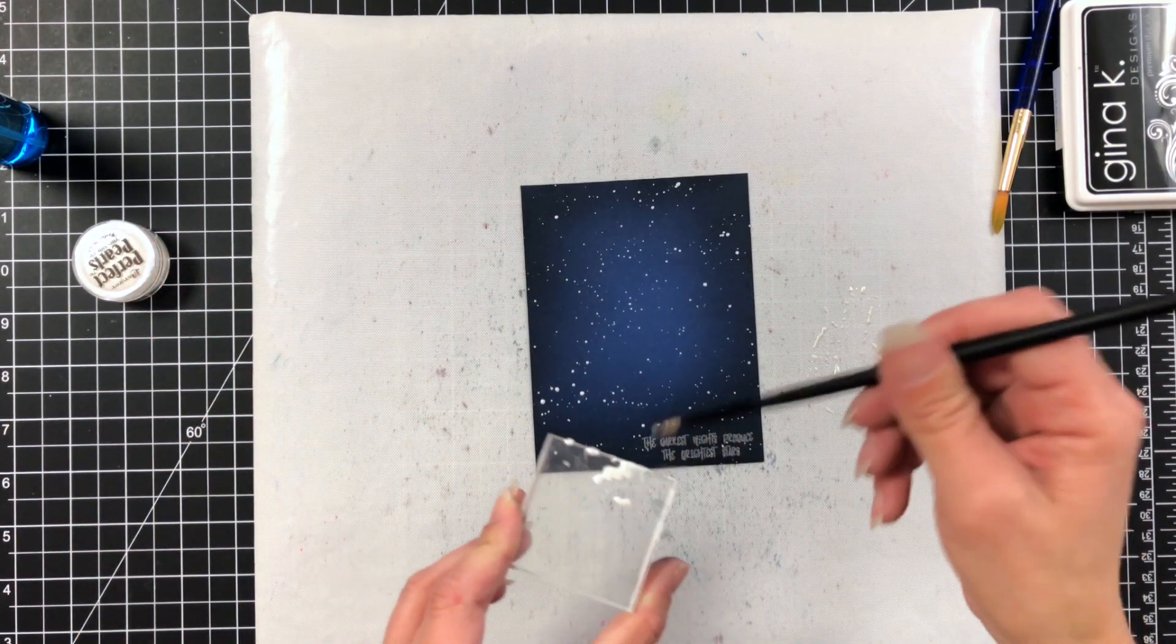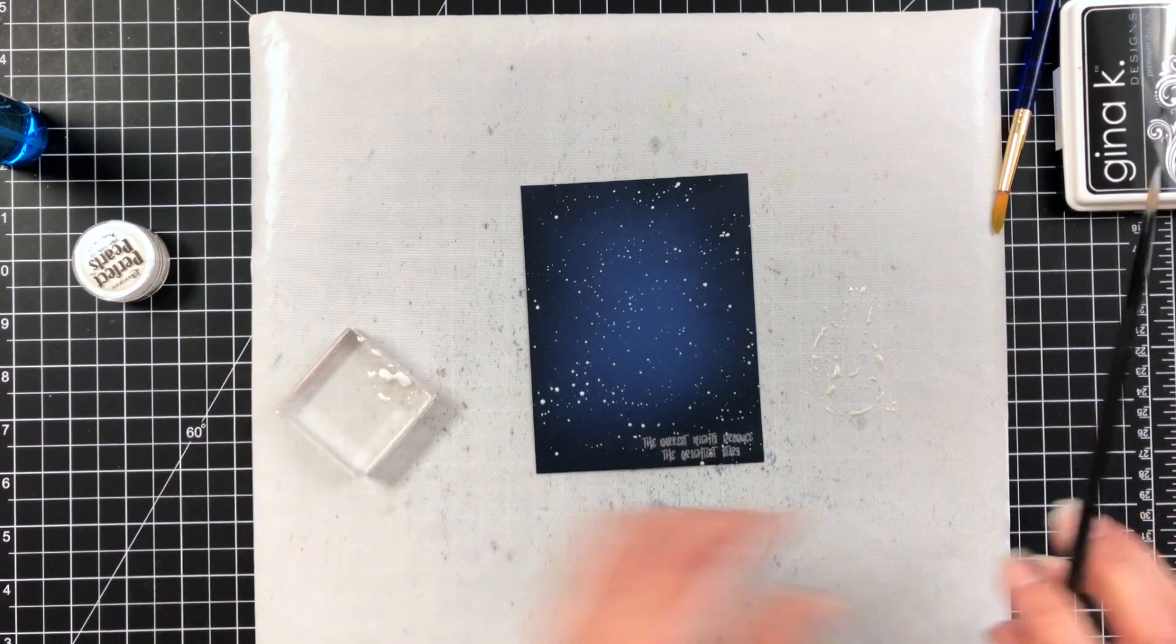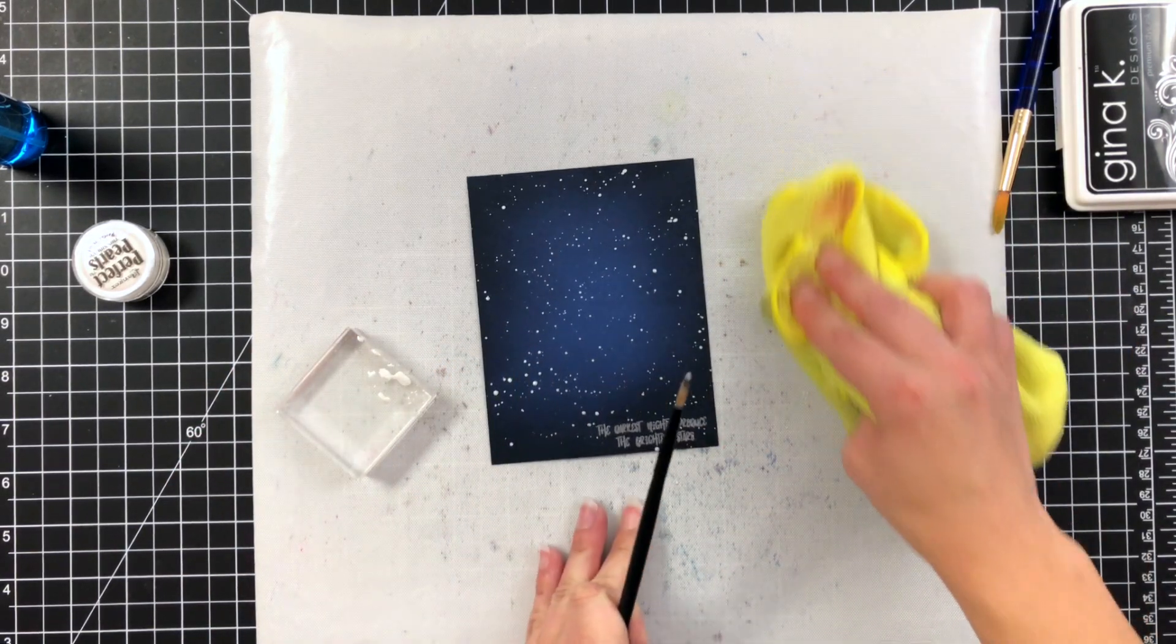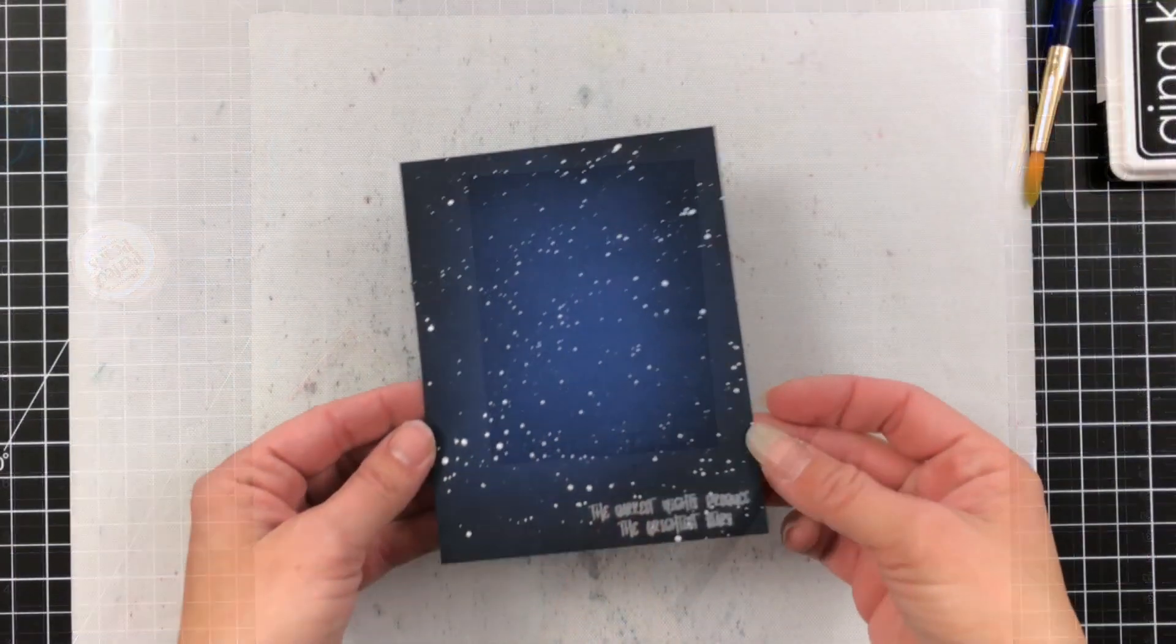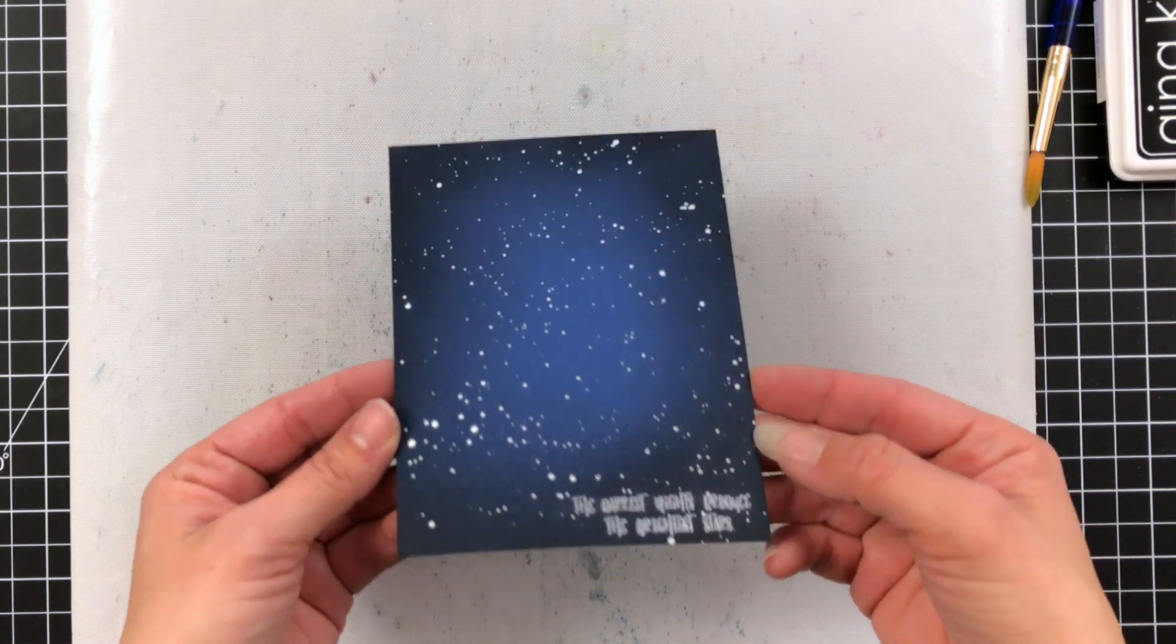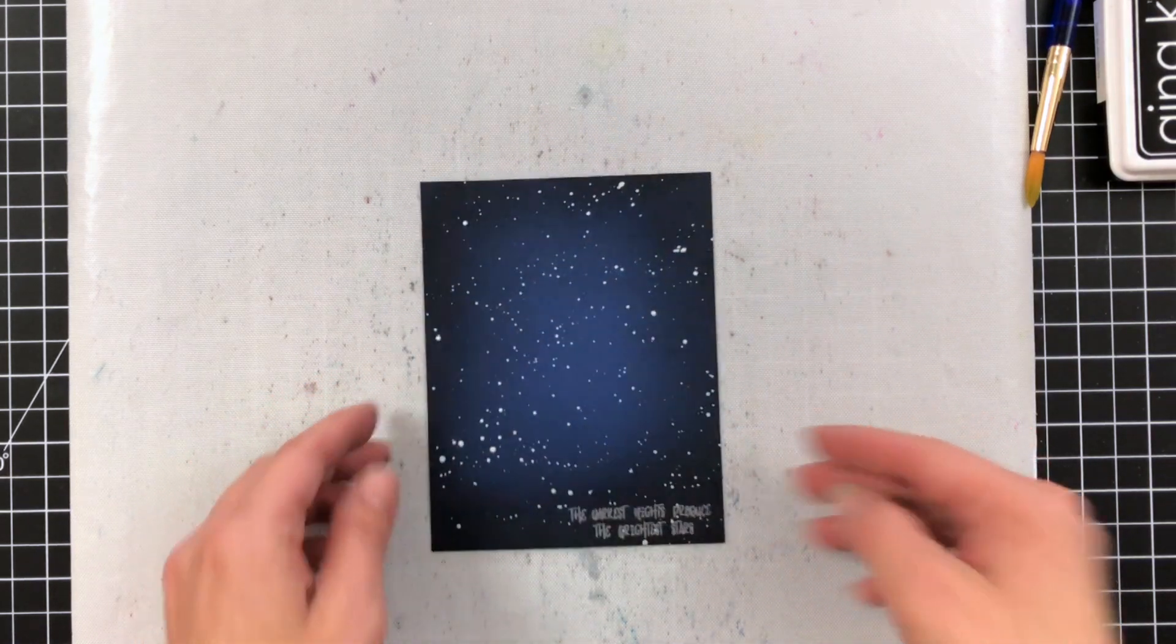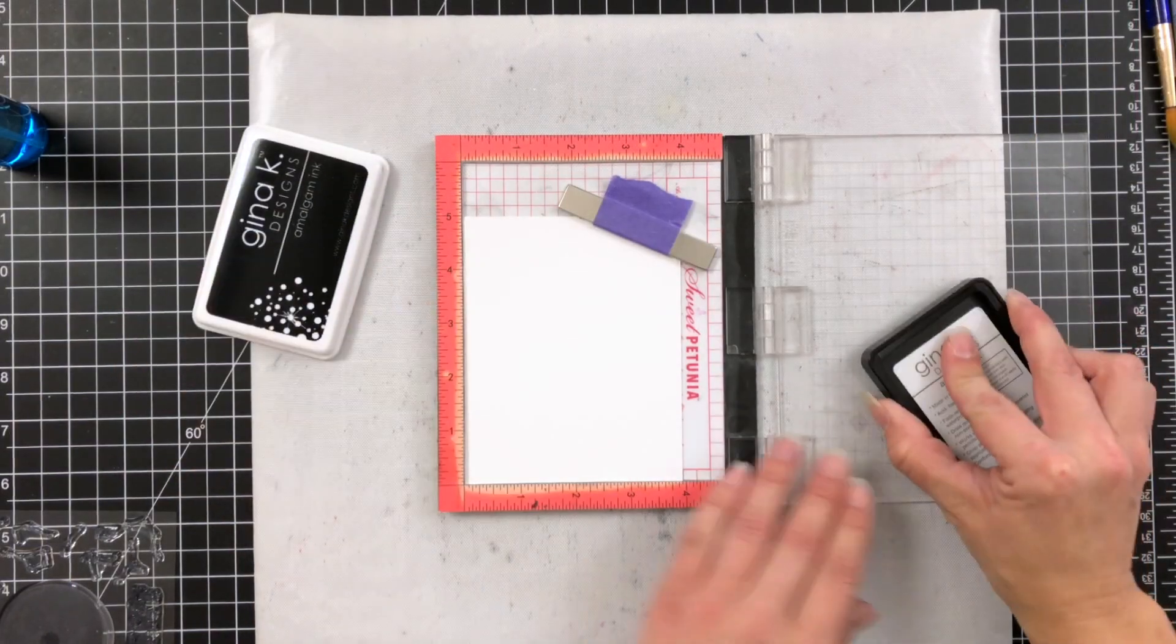And they just look like stars all over the place, which is exactly what I wanted to do. With the sentiment heat embossed at the bottom, you can just rub off any ink that had transferred onto it. So the heat embossing is resisting that ink. You can just wipe it away.